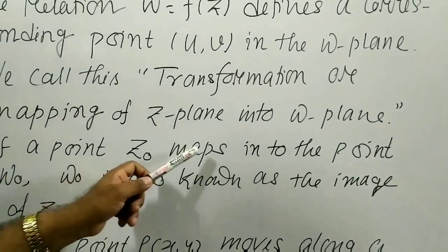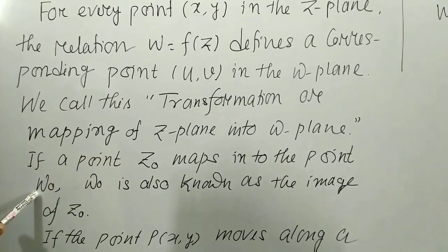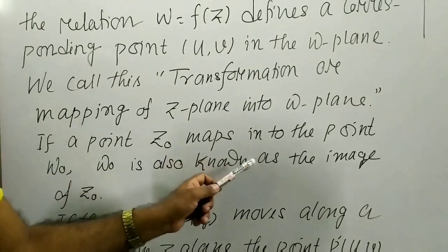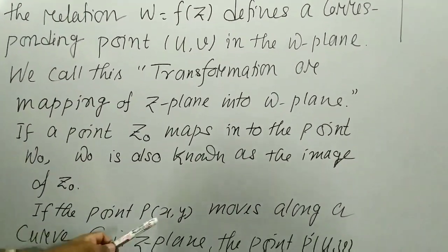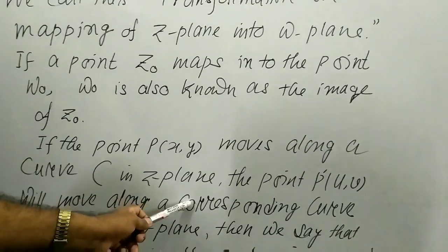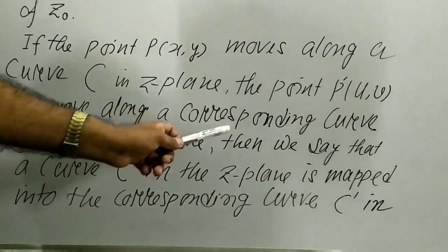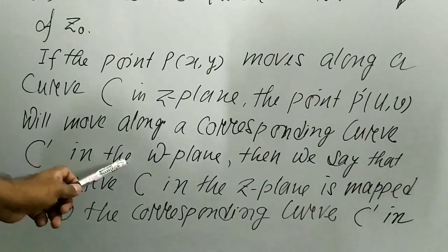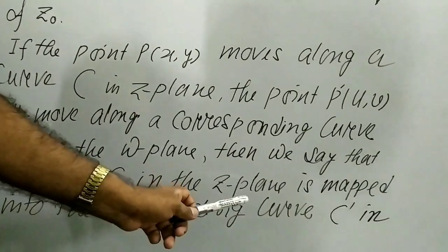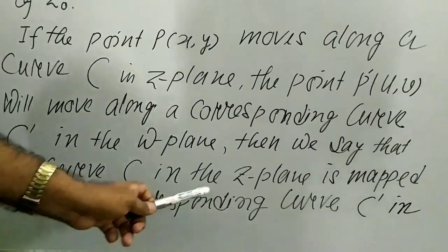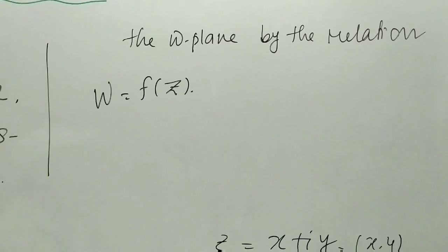If a point z-naught maps into the point w-naught, then w-naught is also known as the image of z-naught. If the point P(x, y) moves along a curve C in the z-plane, the point P-dash (u, v) will move along a corresponding curve C-dash in the w-plane by the relation w equals f(z). This is our transformation.